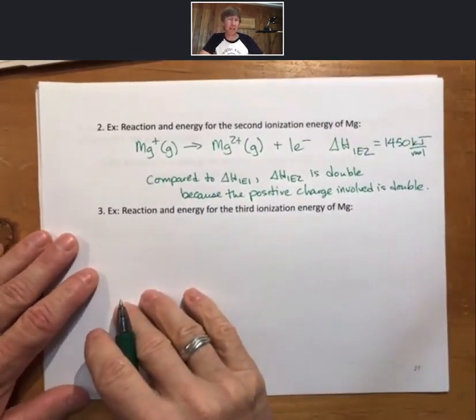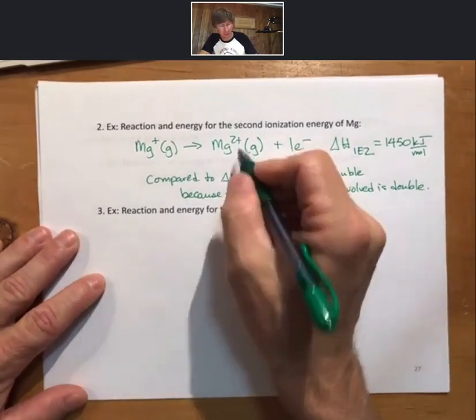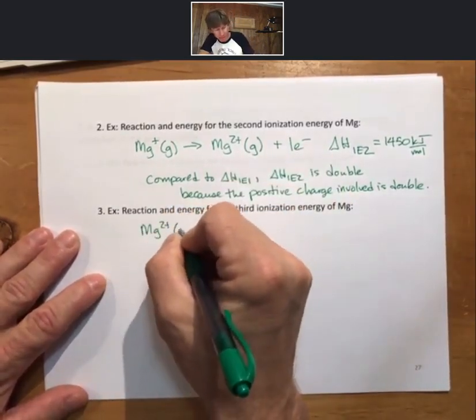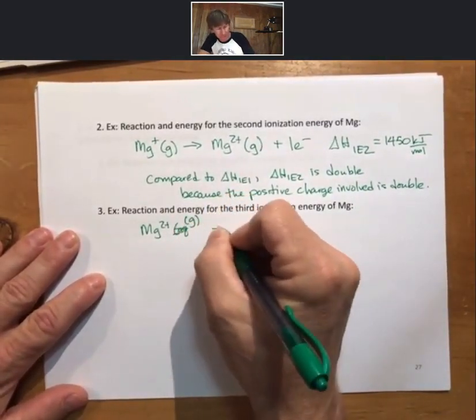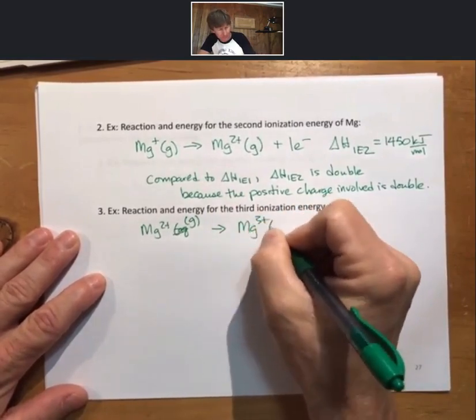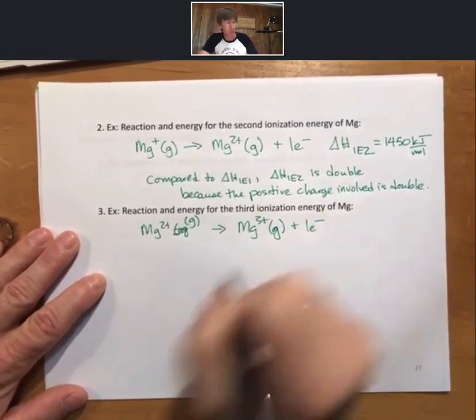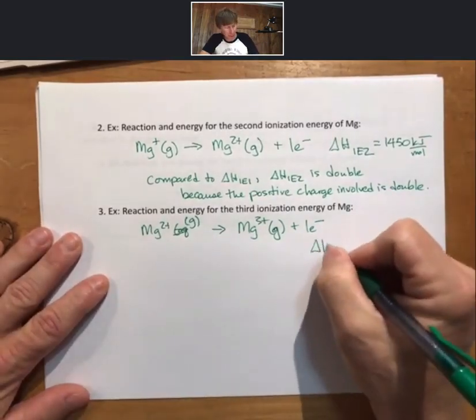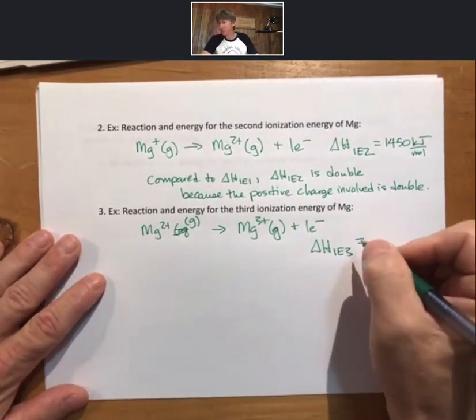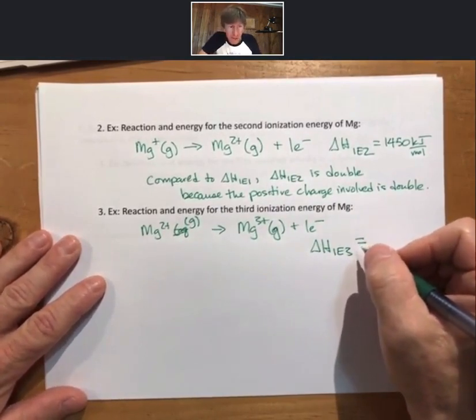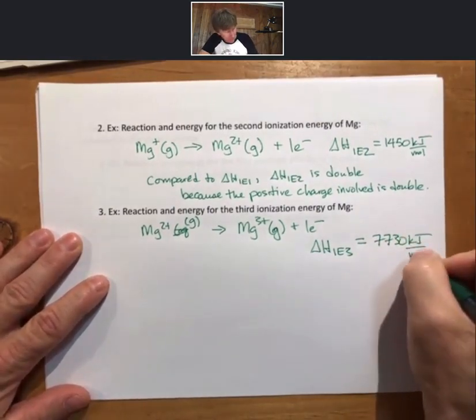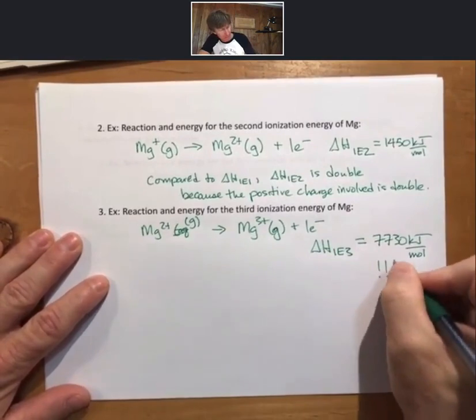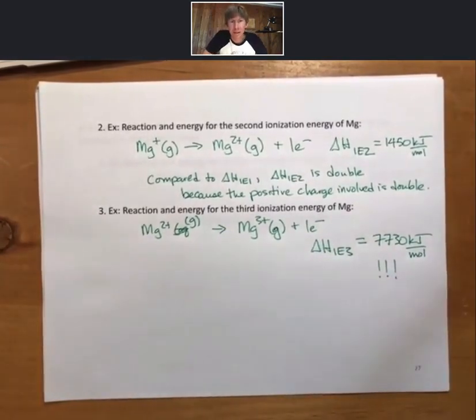All right, ready for ionization energy reaction number three. Start with Mg2 plus. Remove that third electron. This time we get delta H IE3 equal to 7,730. That is a lot bigger than we might expect. What's going on here?